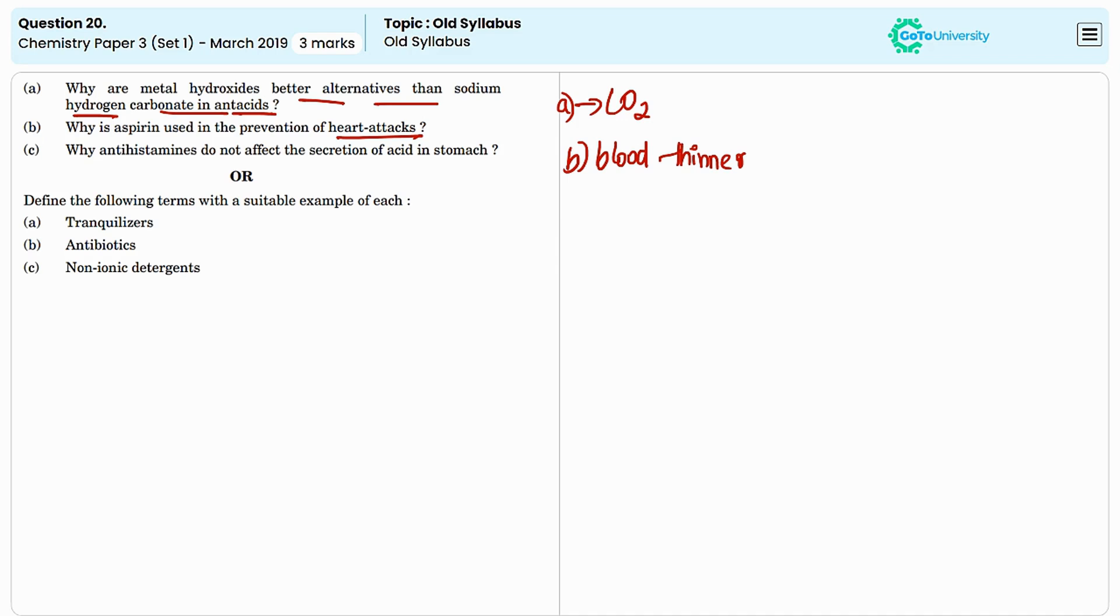By preventing platelets from clumping together, aspirin reduces the risk of blood clots forming in the arteries which can block blood flow to the heart and trigger a heart attack.